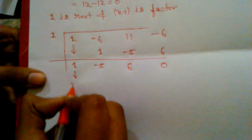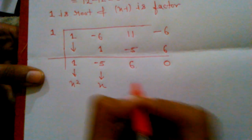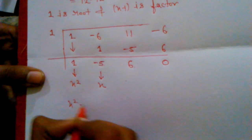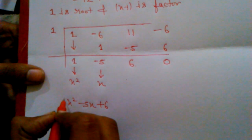And here, x², x, and this is the constant. Then, x² - 5x + 6, this is another factor of this polynomial.